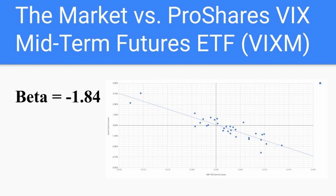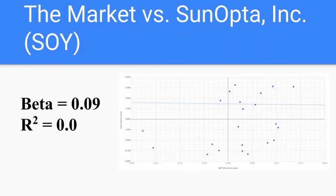Here's our last example, soy. It's called SunOpta Inc. Its beta is almost zero, right? What can you tell by that? Well, you can't tell much, because the performance of SunOpta Inc. doesn't seem to be correlated to the market at all. This makes no sense. There's no pattern for us to recognize here.